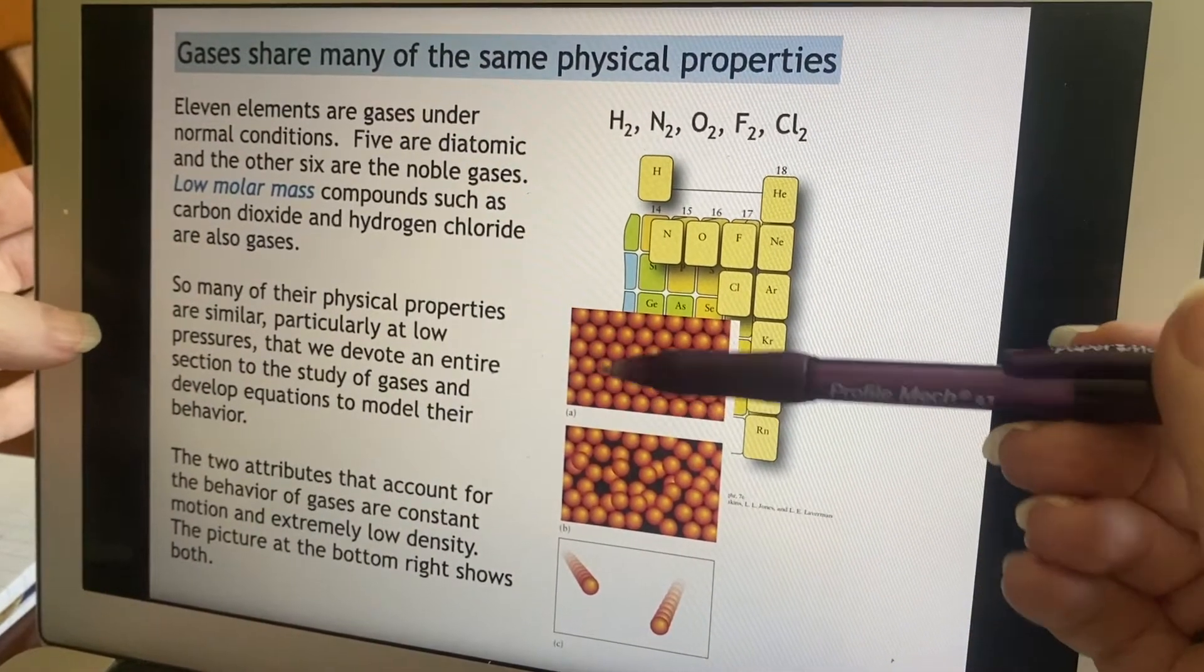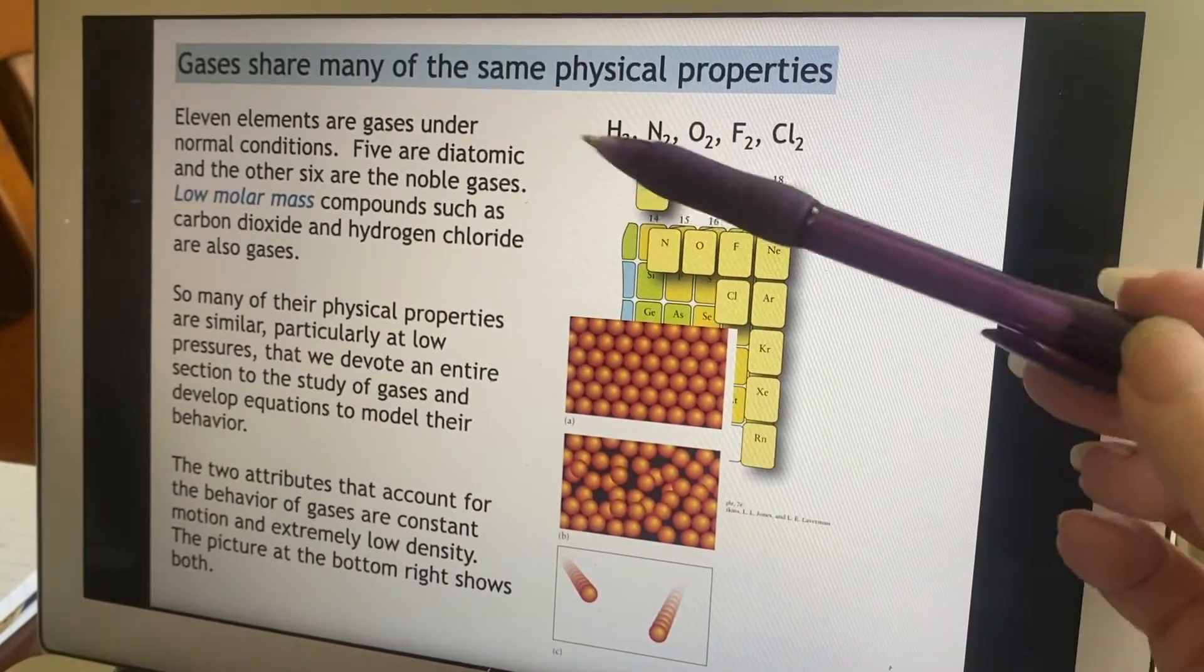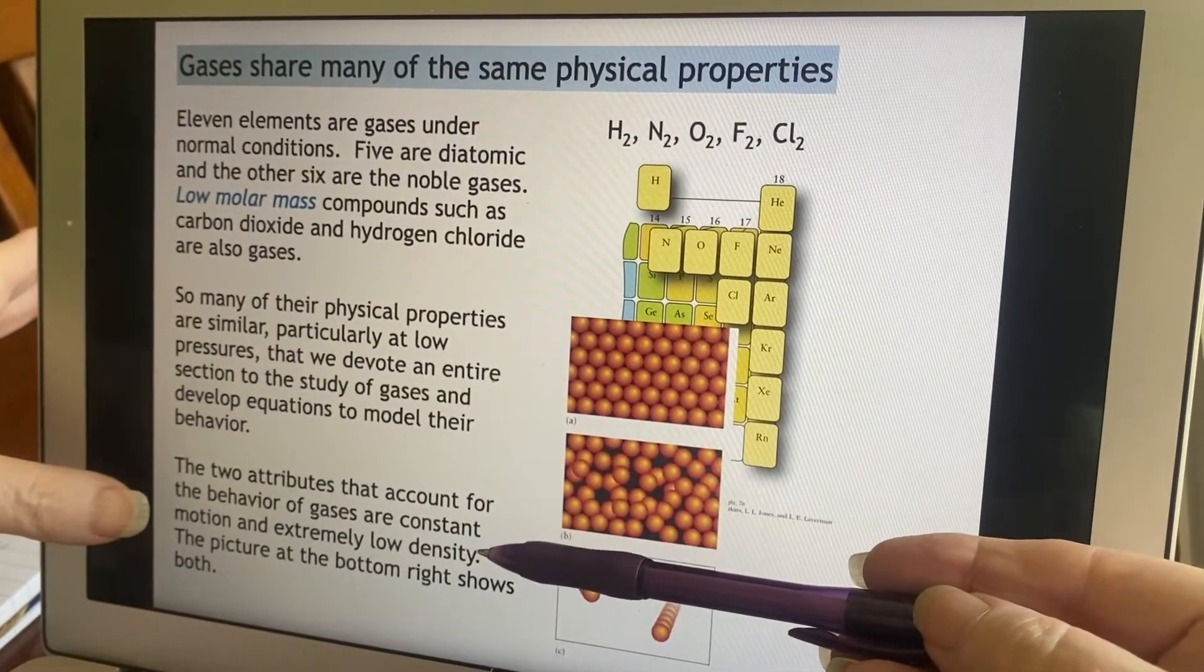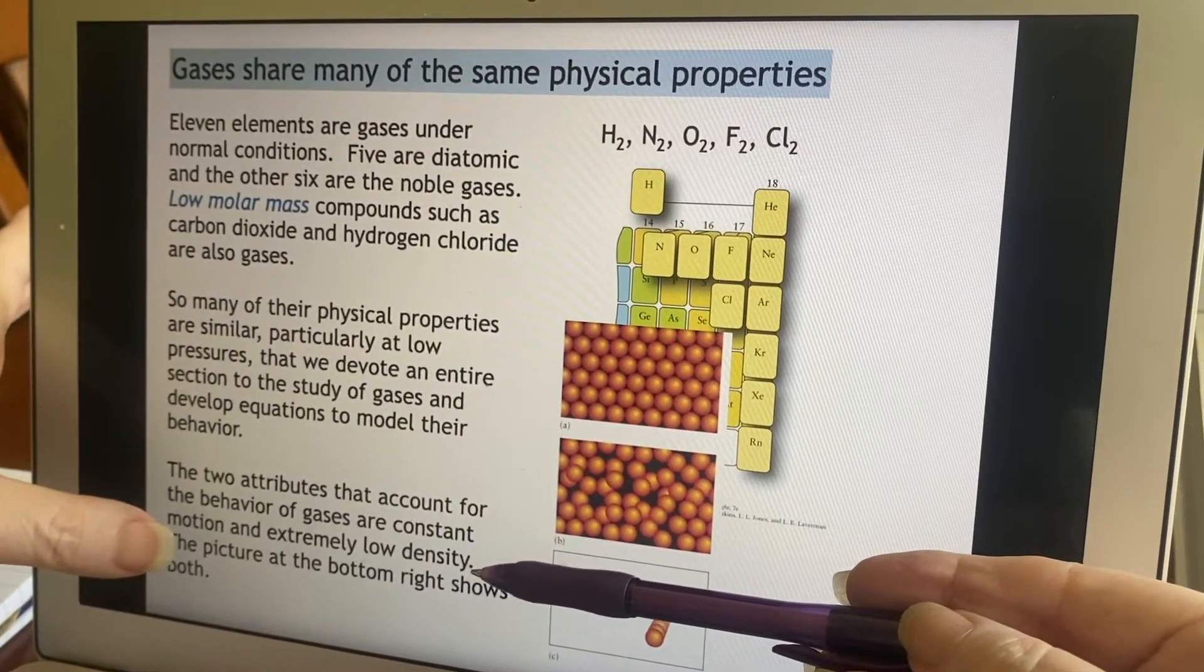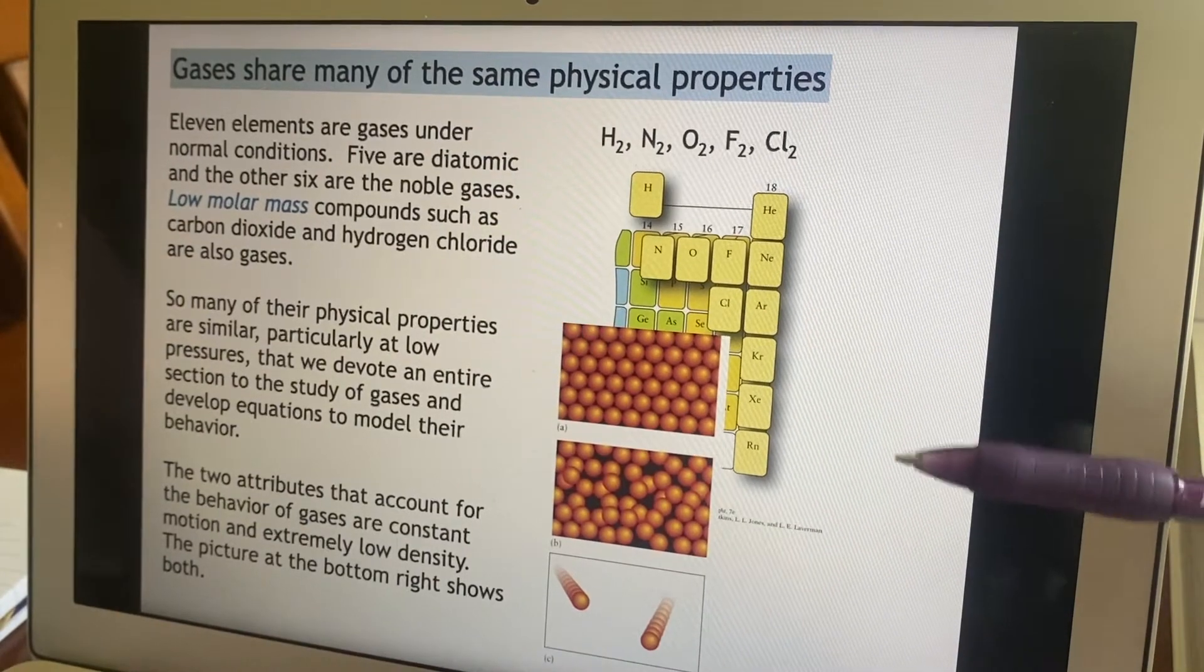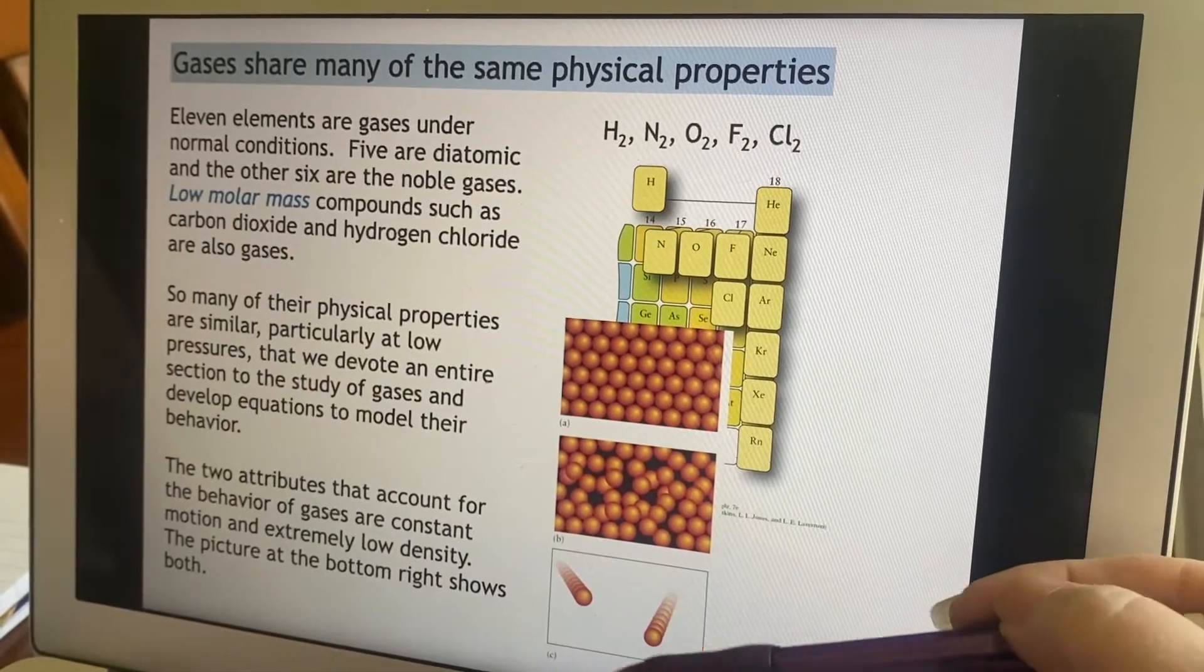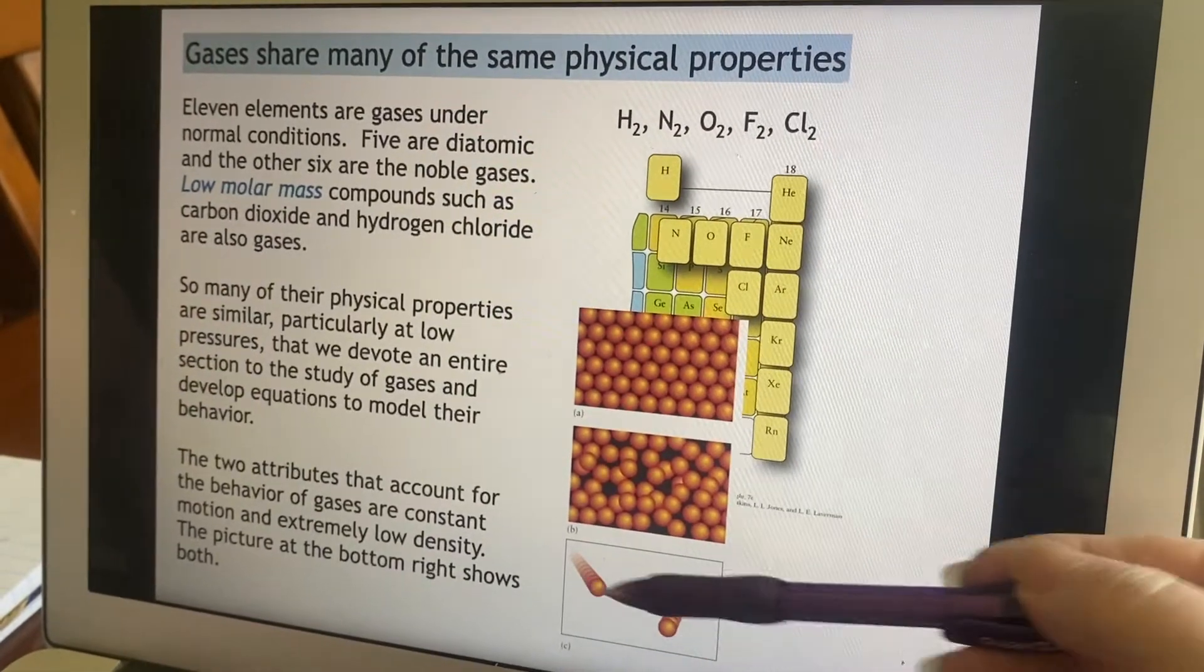Now, these properties are very similar, particularly at low temperatures. So at low temperatures, if you are still a gas, you're going to behave very similarly to every other gas. What is it that makes that happen? Well, it's because if we have low pressure, we have low density. That means things are not close together. If they're not close together, we don't have to worry about those intermolecular forces that we were talking about earlier in the semester. The other thing that is also responsible is the fact that the gases are in constant motion. This bottom right is trying to depict the motion and how far apart things are.